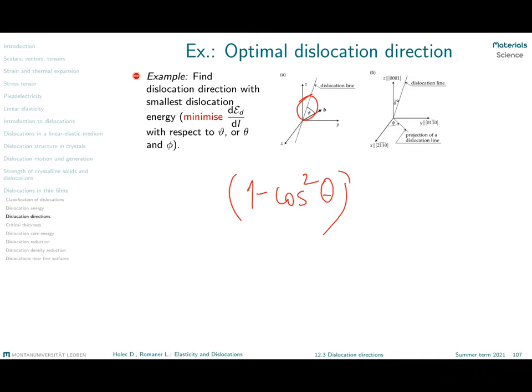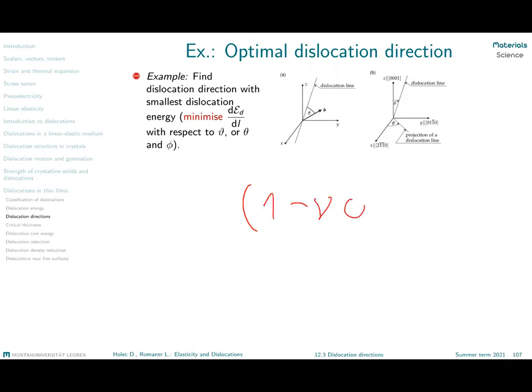Where do we get minimum energy? That's when the cosine is equal to one — when theta is equal to zero or 180 degrees. The formula had in the denominator one minus nu, the Poisson's ratio, times cosine squared theta. So the minimum is obtained for theta equals zero or theta equals 180 degrees, which corresponds to the screw configuration. In many dislocation textbooks you will read this formulation: that the screw dislocation processes the lowest energy configuration. We got it here for bulk material, secondly for elastically isotropic material.